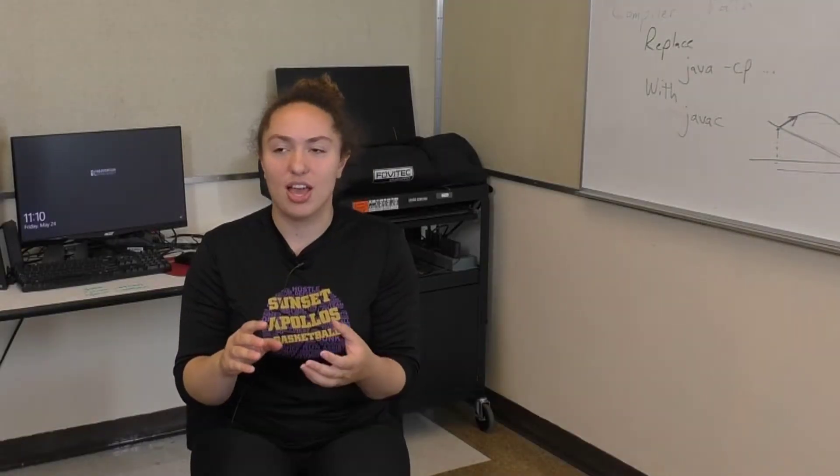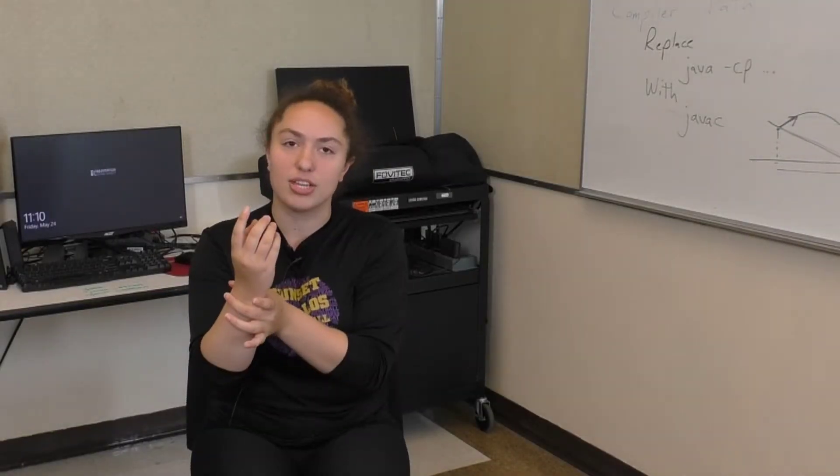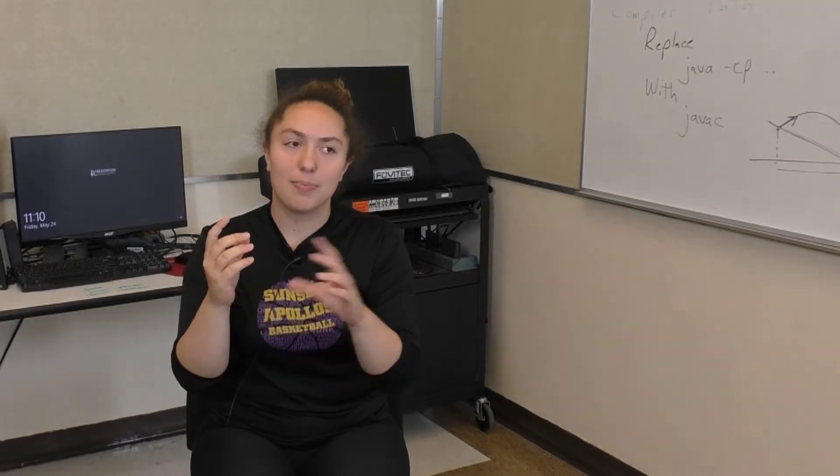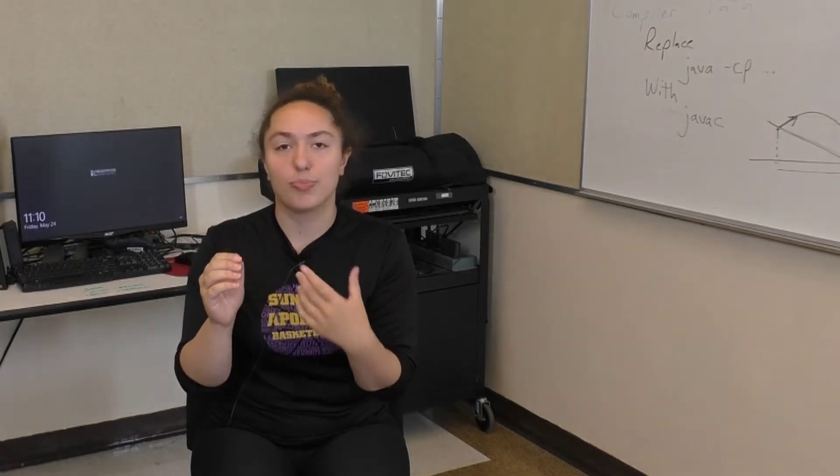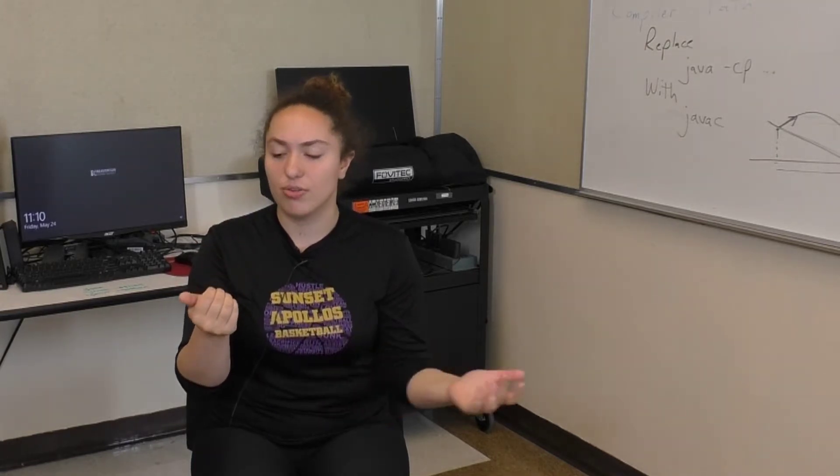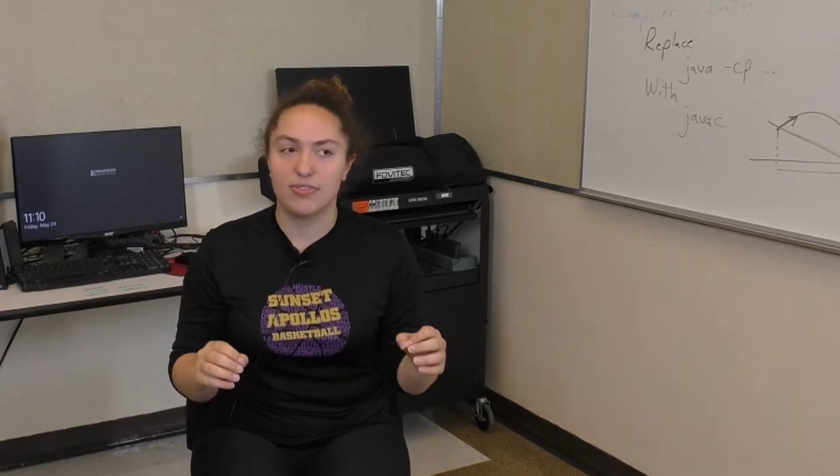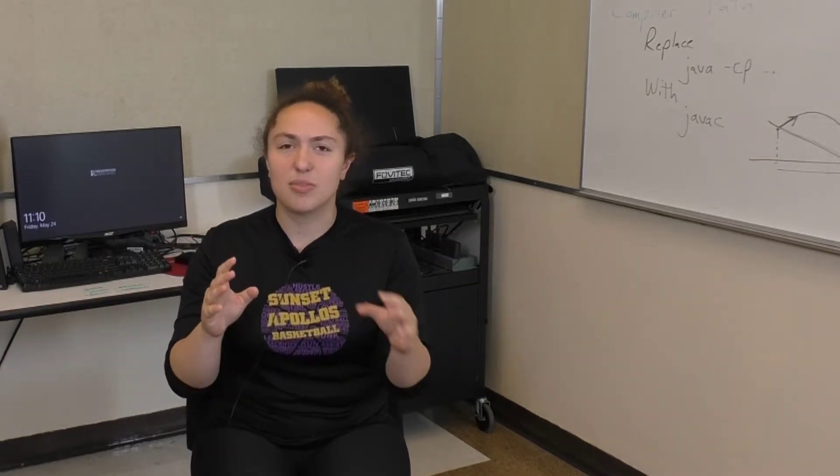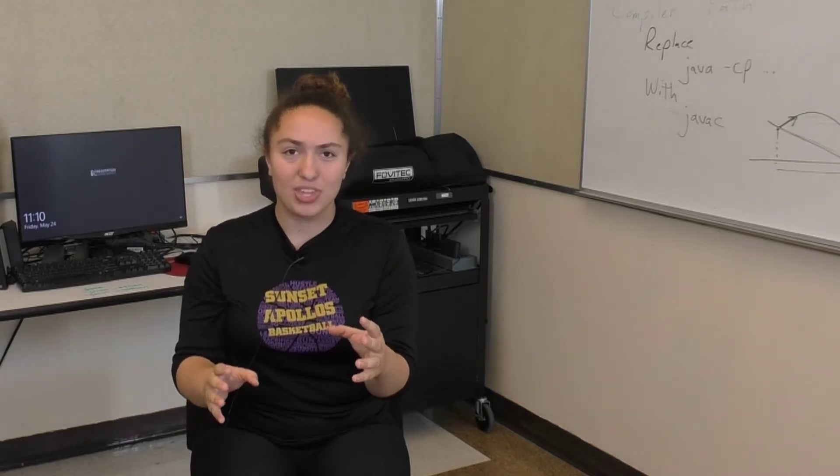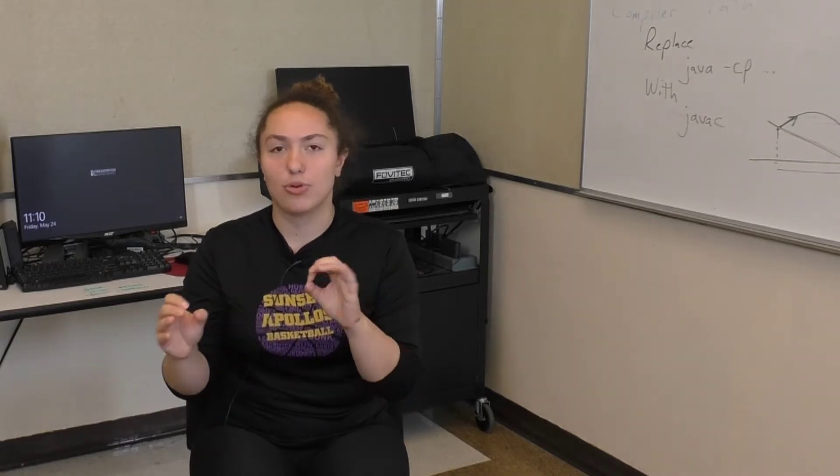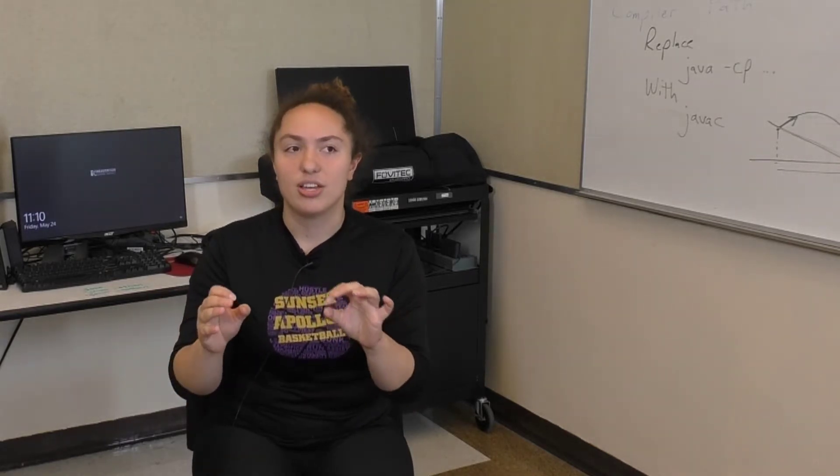I used support vector machines to take EMG signals from a myo armband to then process them and try to interpret ASL hand gestures, like alphabet, like A, B, C. And it ultimately ended up that I was able to distinguish between A, B, and C very well, and then as it added on more letters because of the similarities between training data, the support vector machines had a more difficult time distinguishing certain letters.